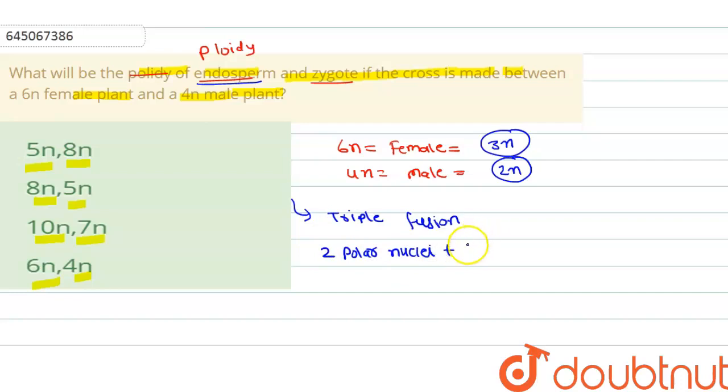Polar nuclei means female gamete, so 2 times female gamete having 3n ploidy, it means 3n plus male gamete having 2n ploidy, so it is 6n plus 2n equals 8n. So for endosperm it is 8n.